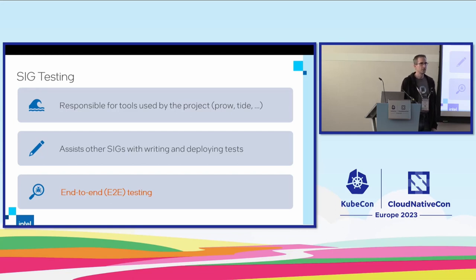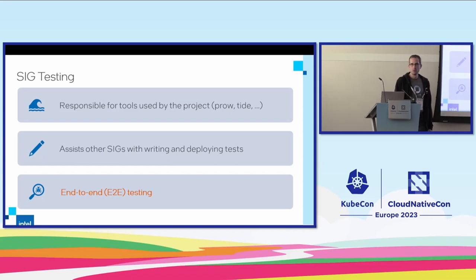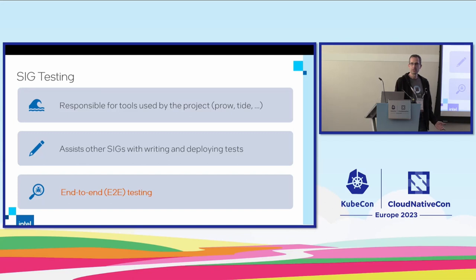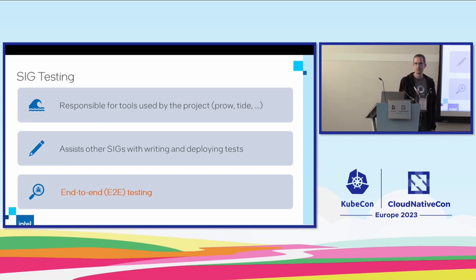SIG testing is a big SIG that is really crucial to Kubernetes. We officially own several tools that really keep the lights on in Kubernetes — tools like Prow for testing, TIDE for merging code that has approvals. All of that are crucial tools that keep the high velocity of changes going into Kubernetes alive, and keeping the project healthy is part of that too.